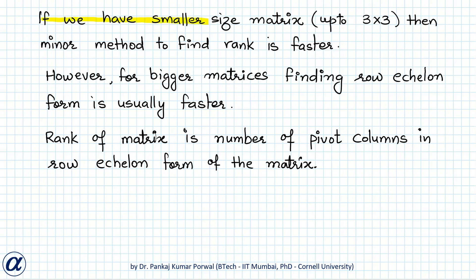There are many ways to find the rank of a matrix. For smaller matrices up to 3×3, the minor method is faster. For bigger matrices, finding the row echelon form is usually faster, where the rank equals the number of pivot columns in the row echelon form. To learn more about these two methods, you can watch the videos on the minor method and row echelon form method to find rank of a matrix.